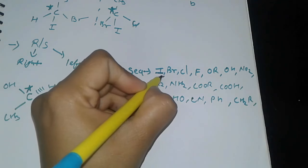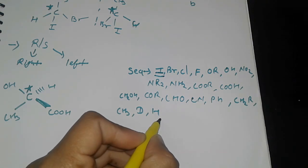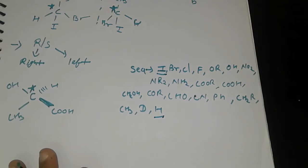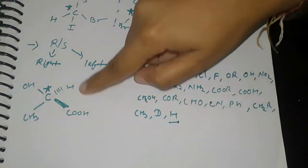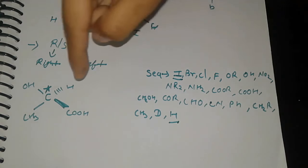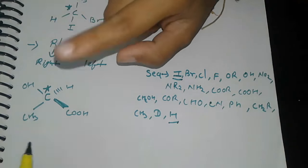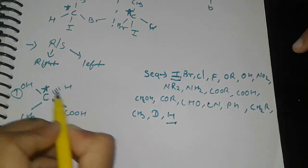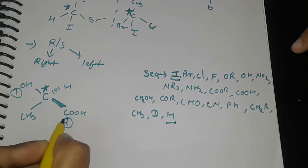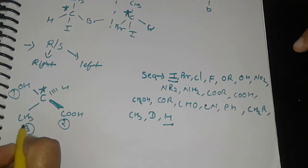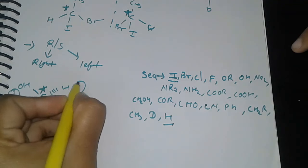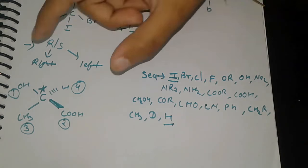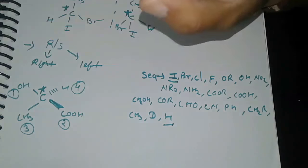The first priority is given by atomic number. Higher atomic number means higher priority, and hydrogen is the lowest priority atom. In this example, the first priority will be hydroxy group, second will be carboxylic, third methyl, and fourth hydrogen.